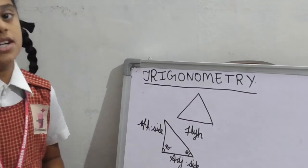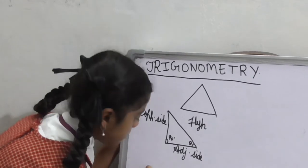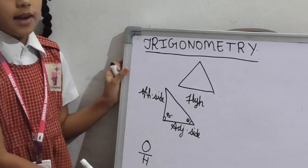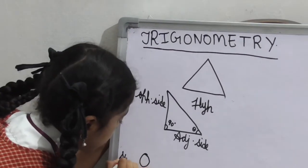Trigonometry ratios. Opposite by hypotenuse is a ratio. This ratio is named as sin theta.